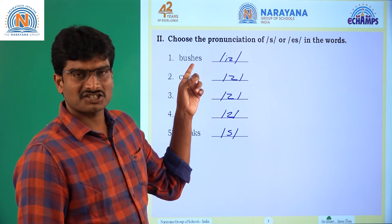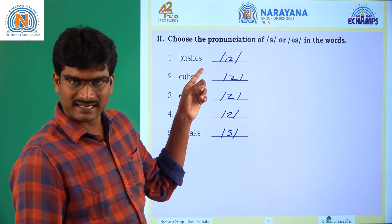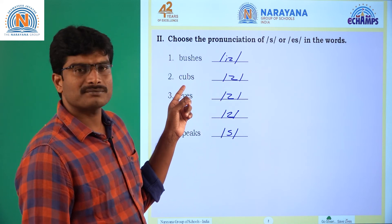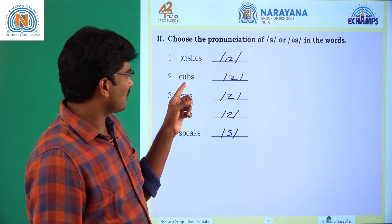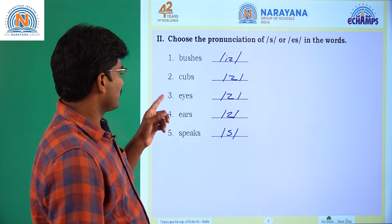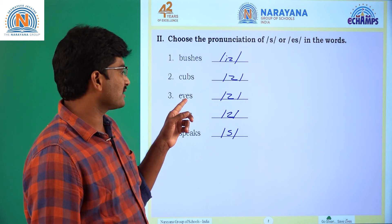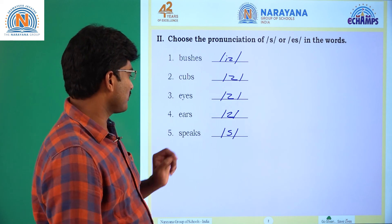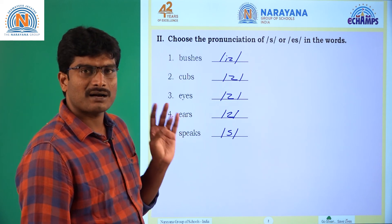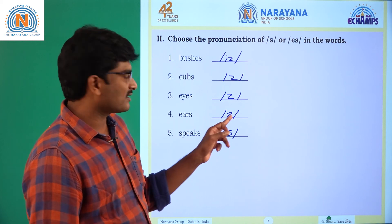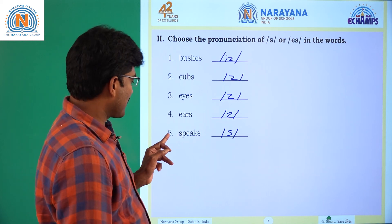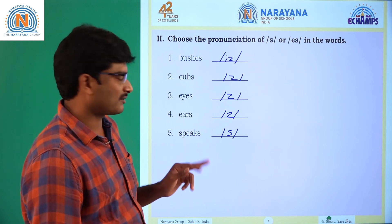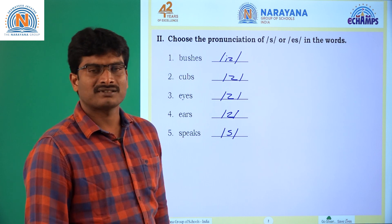When the word ends in 'sh' sound and 'es' is added, it comes under 'iz' sound — 'bushes.' Question number 2: when the word ends in 'b' sound, the sound is 'z' sound. Question number 3: when the word ends in a vowel sound, it comes under 'z' sound. Question number 4: when the word ends in r, l, b, g, m, l, n, r, or v, it ends in 'z' sound. Question number 5: when the word ends in 'k' sound — k-s — as in 'speaks,' it comes under 's' sound.